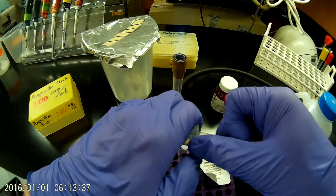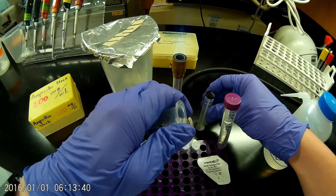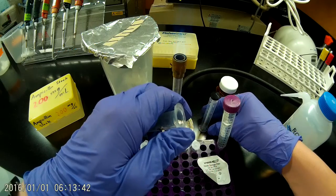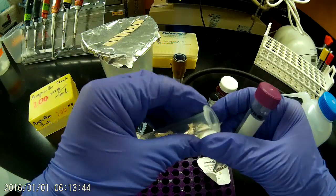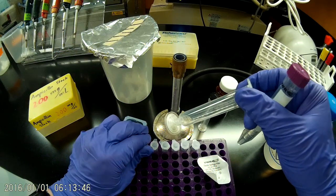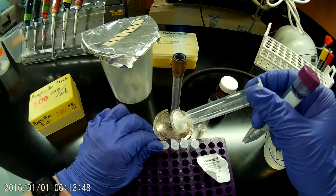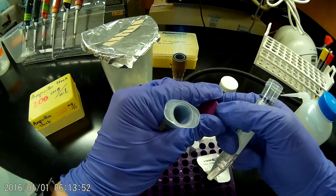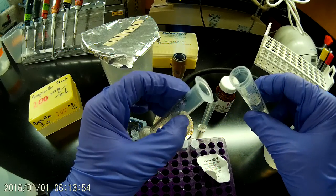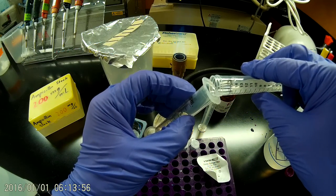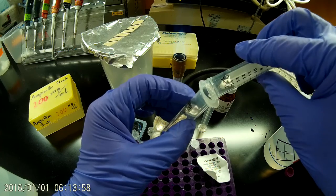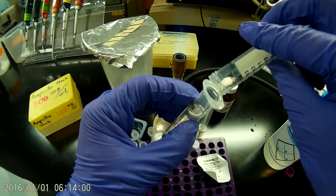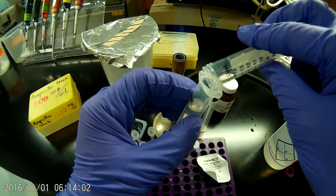Now I'll pull out the plunger, set that aside, and then I will drop that cap aside, and then I'll just pour my ampicillin solution into the syringe.